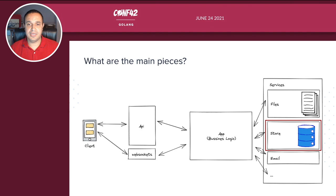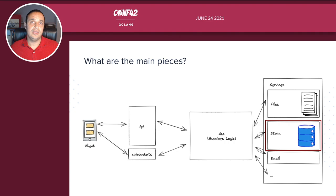One of the services, for example, is the file service that allows us to store files in S3 or in the local file system, or the email service that allows us to send email notifications. The important piece here is the store. The store service is an abstraction that provides all the storage mechanisms related to database access, database storage, and database queries. The app layer doesn't know anything about SQL or how the data is actually stored.